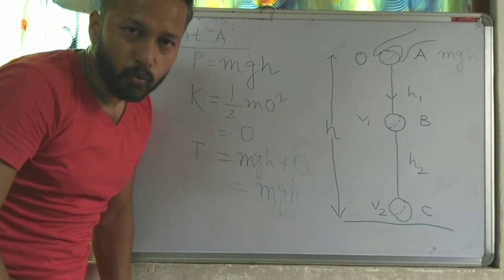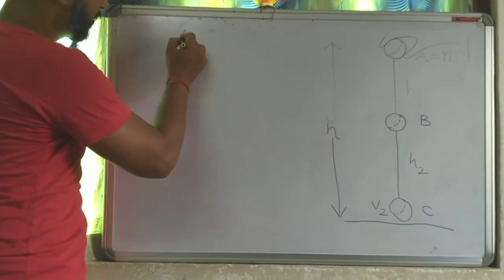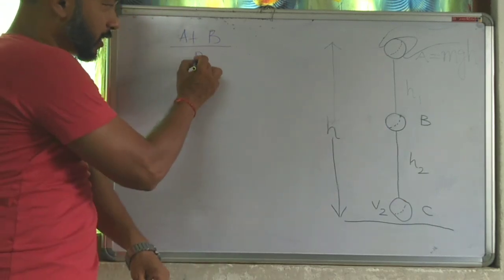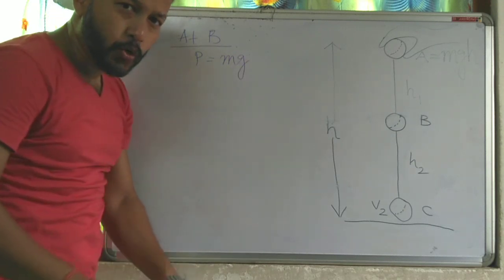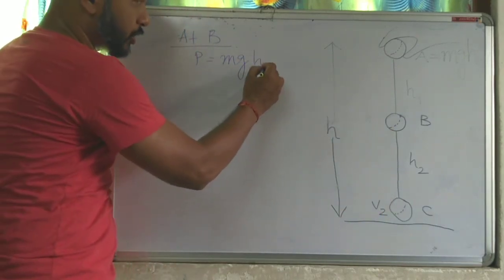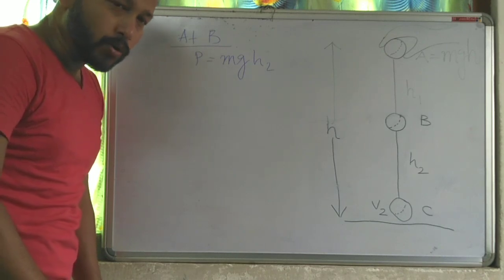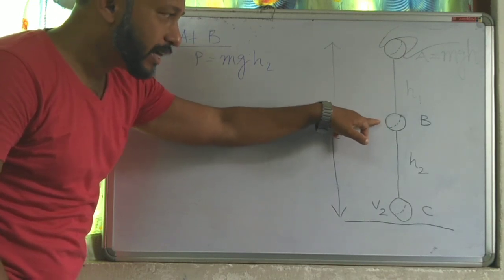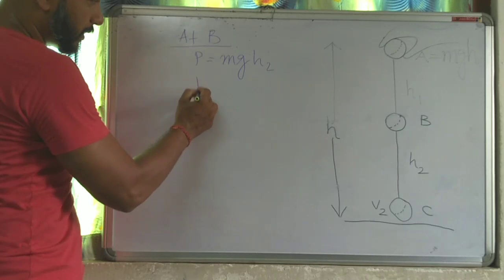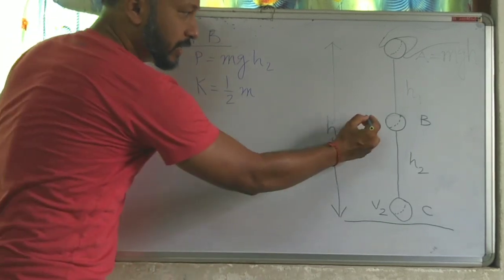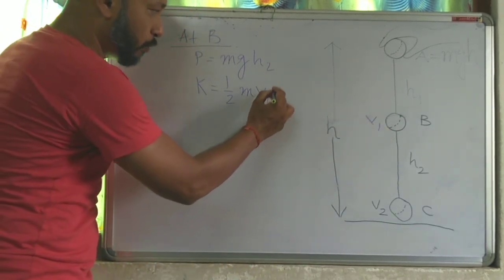Now we will find the total energy at B. The potential energy at B is MGH, where the height from the ground is H2, so potential energy equals MGH2. The kinetic energy at B is half M V1². We need to find V1, so we use the equation of linear motion from A to B: V² = U² + 2GH. The final velocity is V1, the initial velocity at A is 0.